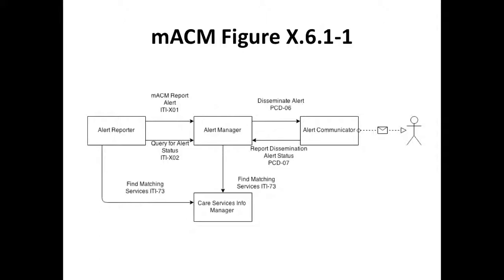Here is a diagram from the current MACM draft standard. There are four actors: the Alert Reporter, Alert Manager, Alert Communicator, and the Care Services Info Manager. This particular figure is specific to health workers, and health worker information is held in the Care Services Info Manager. What's MACM-specific is the Alert Reporter, Alert Manager, and Alert Communicator — the three actors on the top. The Alert Reporter originates the alert; the Alert Manager distributes those alerts to one or more Alert Communicators; and the Alert Communicator delivers the message to the health worker and provides status updates on the dissemination of that alert.